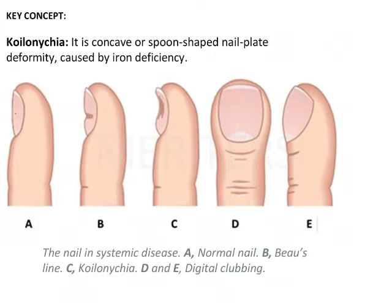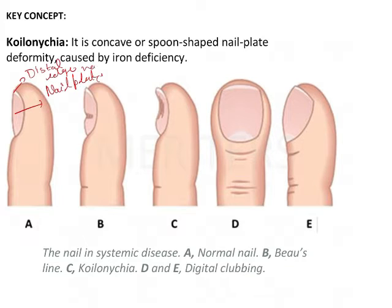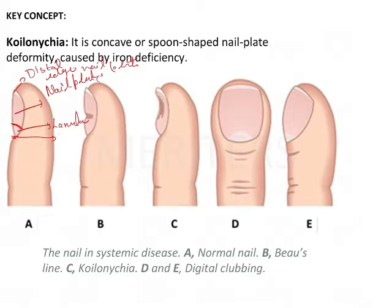So the normal anatomy of the nail — this is the nail plate. This is the distal edge of your nail plate. Then there will be a semicircular area here, and this particular area is known as the lunula. Here there will be a cuticle-like thing, and this is known as the cuticle or eponychium. And then there will be a proximal nail fold.